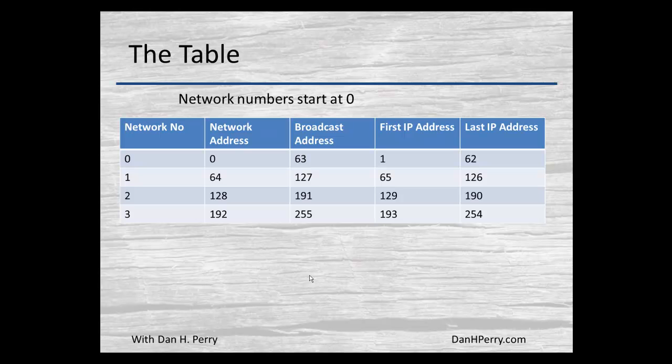The first IP address is one more than the network number. So for network two, we had 128 for the network address, so the first IP address would be 129. The last IP address is one less than the broadcast address — so for network two, since the broadcast address is 191, our last usable IP address is 190. Take a close look at this table.